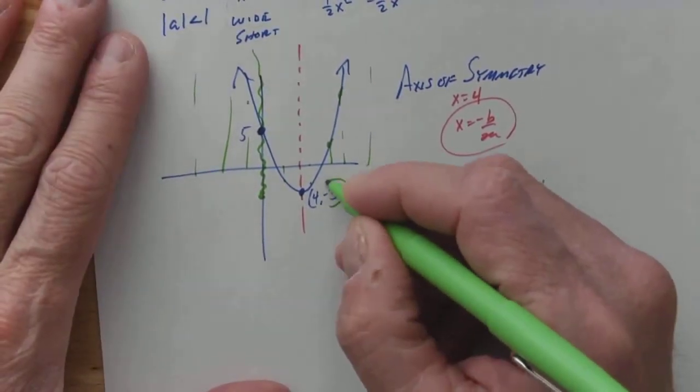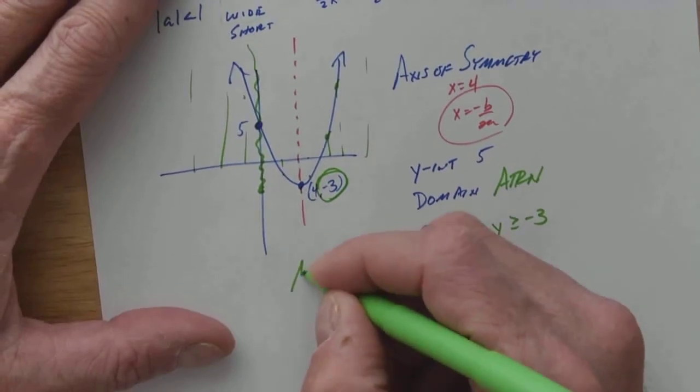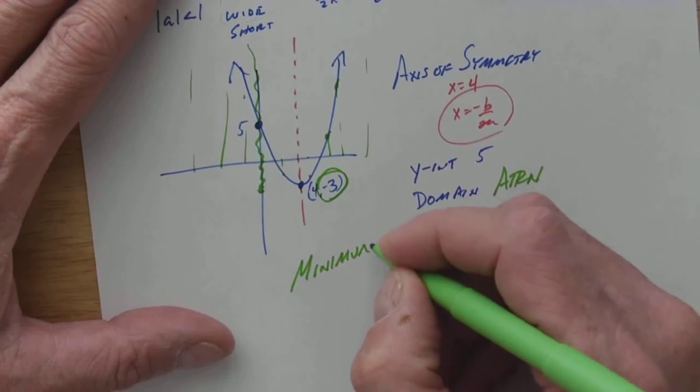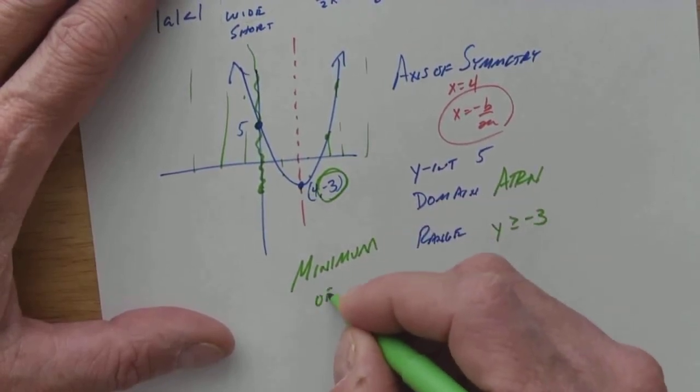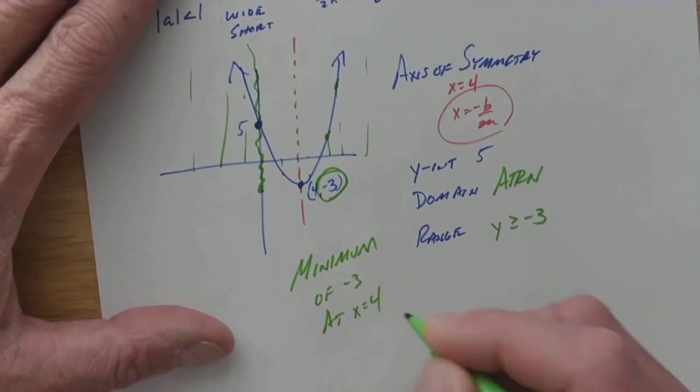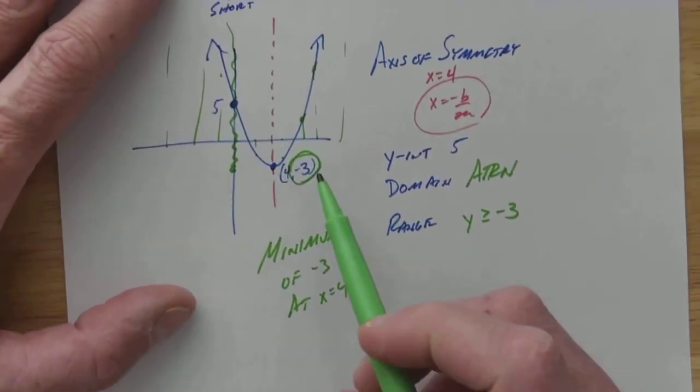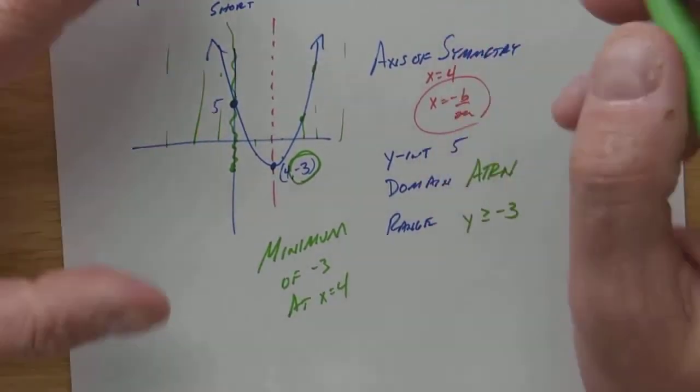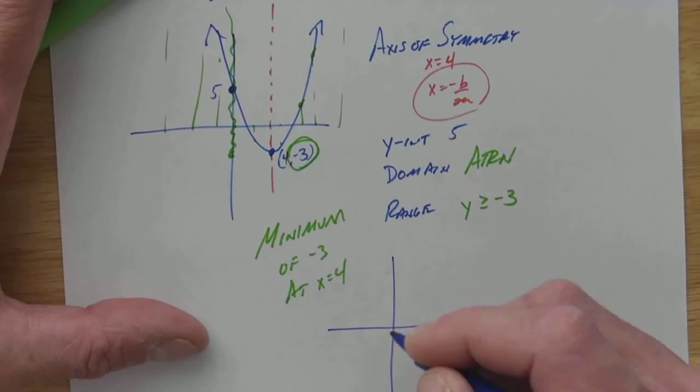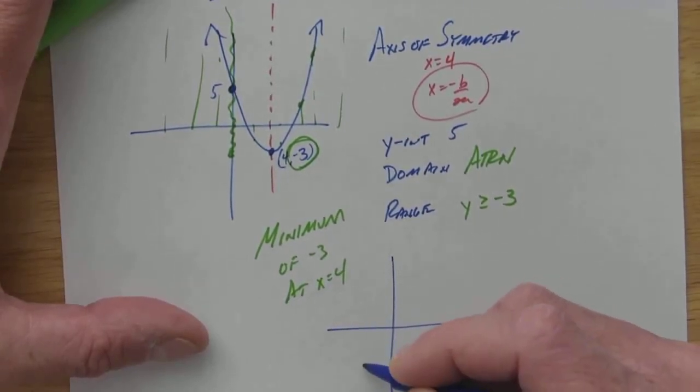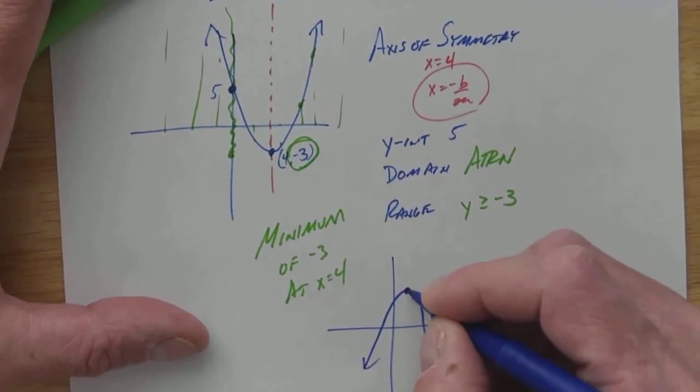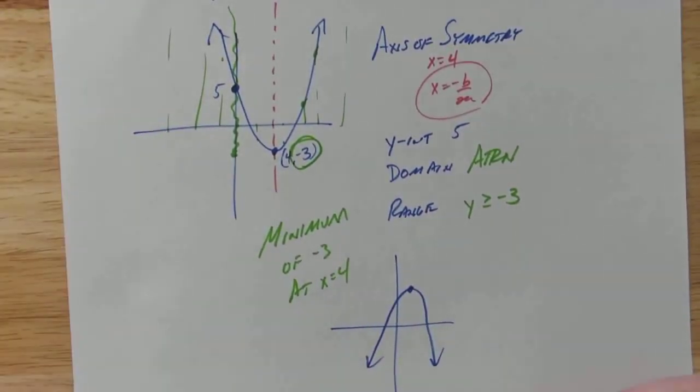Now, why is that? Well, in this case, I had a minimum value of negative 3, and it occurs at x equals 4. This one had a minimum. Anything that opens up is going to have a minimum. If we have something that opens down, we'll do another one here in just a second. Then it's going to have a maximum.